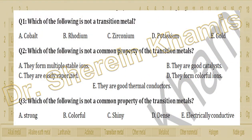Question number 1 asks: which of the following is not a Transition Metal? We know the transition metals and their properties. We have Cobalt, Rubidium, Strontium, Potassium, and Gold. Which one will not be a transition metal? All of these are transition metals except one from the alkali metals — Potassium. It is from the alkali metals, Group 1.